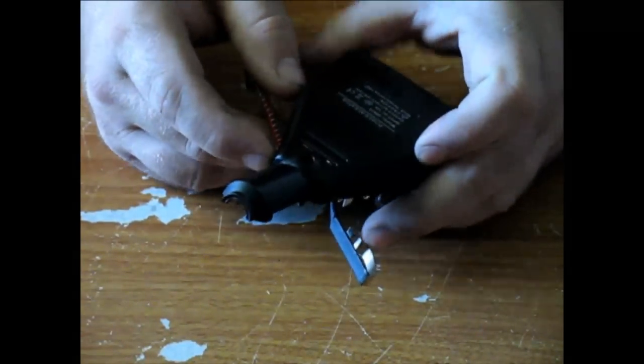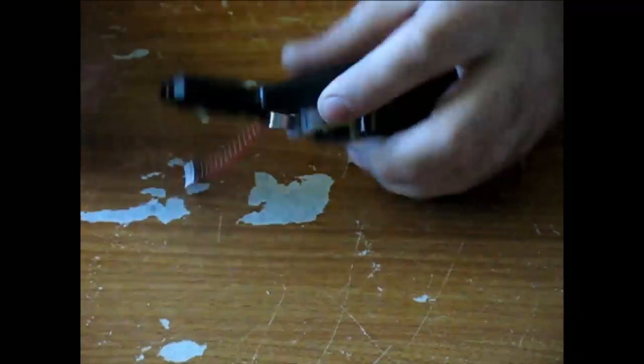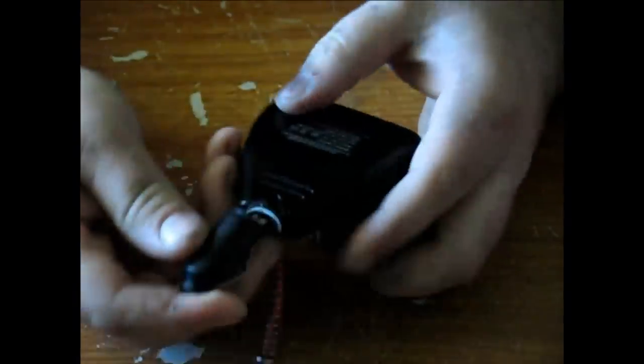We need to remove the cigarette lighter adapter. This can easily be done by scoring it with an Xacto knife, and it'll simply snap off the inverter.